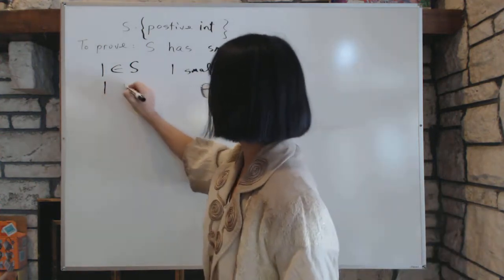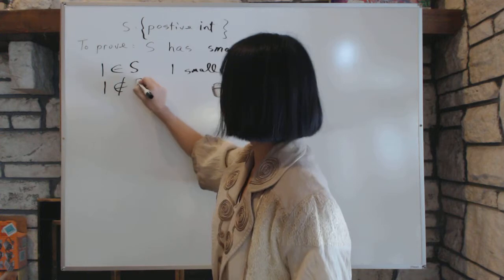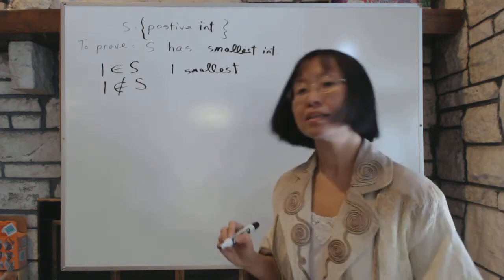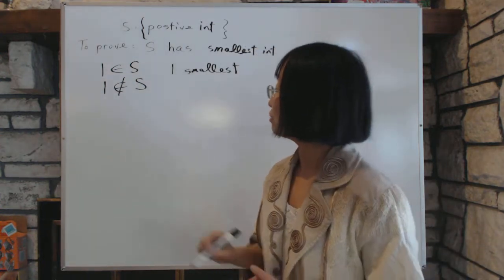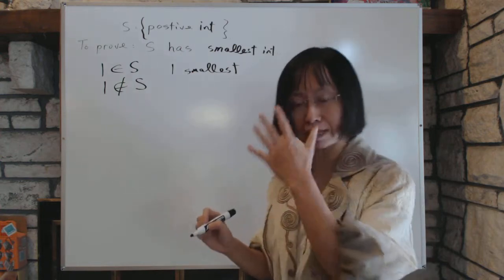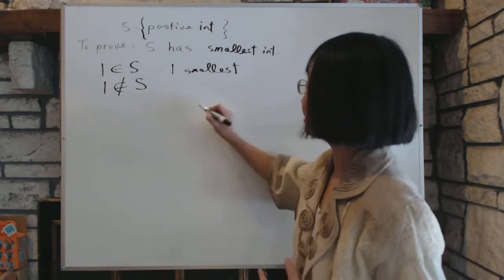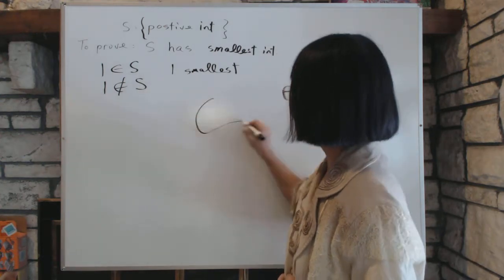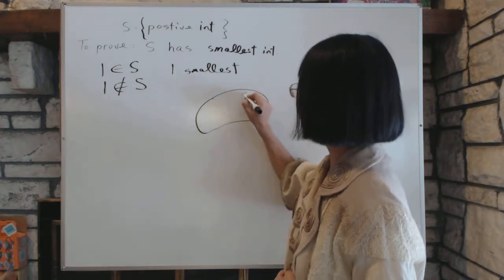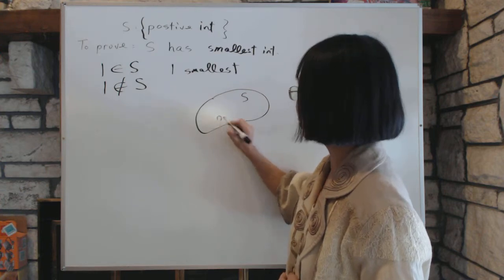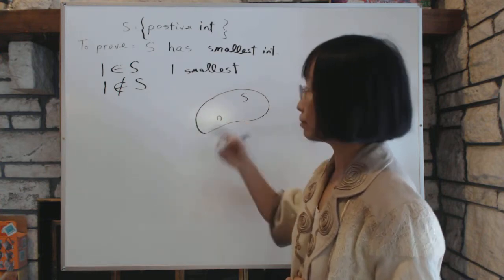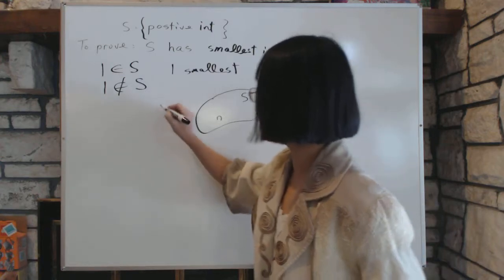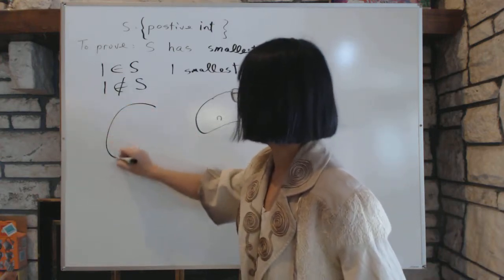Now the second case is more interesting, what if one does not belong to S? Now if one is not in S, then we will draft out two sets. The kind of set proofs are always exciting. You have S here. And the numbers in S, we'll call them n. And remember that S is not empty. We don't mess with empty sets, they're not that exciting.